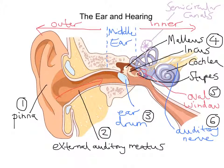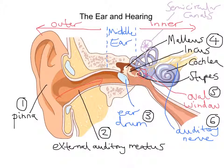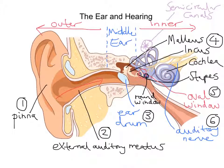Once that auditory nerve transmits the action potential to the brain, all that's left is this one part here — and it's quite tricky to see. I coloured in red the oval window, and you have a circular region here, and that there is what we call the round window. There's an oval window and there's a round window, and the job of that round window is to dissipate the sound — it dampens that used sound stimulus to prevent damage to the ear.